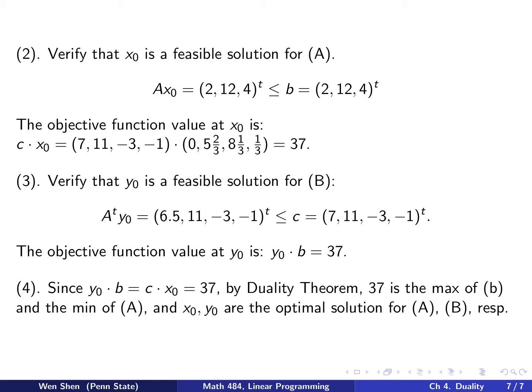Now what do we have? We have that y₀ dot b equals c dot x₀ equals 37. Then, by duality theorem, we conclude that 37 is both the maximum of problem B and the minimum of problem A. And the x₀ and the y₀ are the optimal solutions for problem A and B respectively.